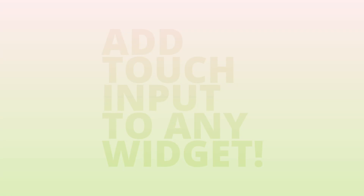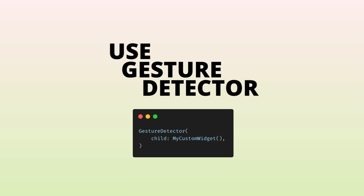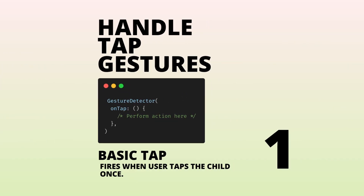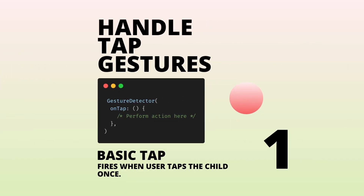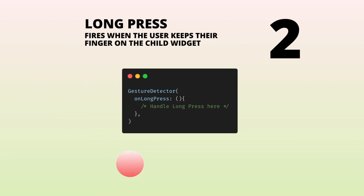Let's go over touch input in Flutter. To add touch input into any widget, you should use the GestureDetector. It allows you to handle the tap gesture — to use this, supply the on tap function.